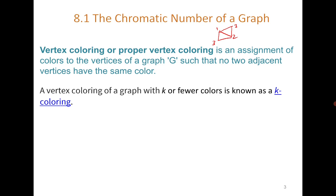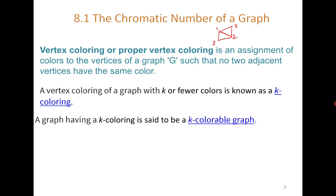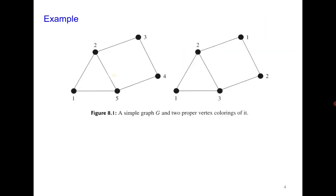If you color the vertices of the graph with k or fewer colors, this coloring is known as k-coloring, and the graph is called a k-colorable graph. For example, in the first case the graph is colored with five colors, so it's five-colorable. In the second case, only three colors are required.